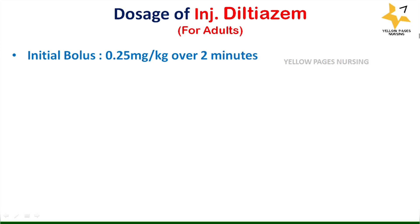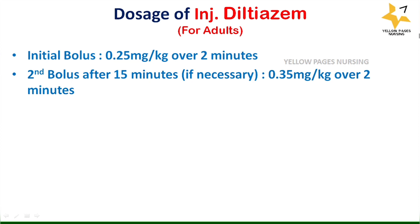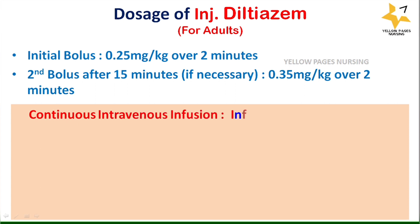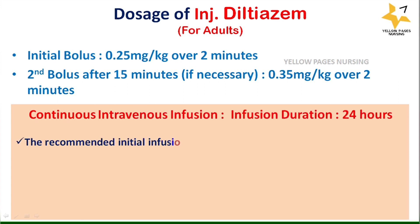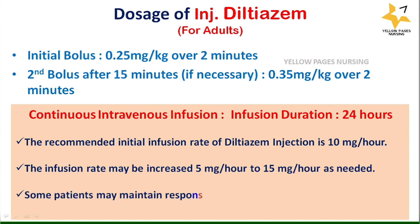The second bolus is given only when necessary, after 15 minutes of the initial one, at a dose of 0.35 mg per kg over 2 minutes. In cases of continuous intravenous infusion, the duration of the infusion will be 24 hours, and the recommended initial infusion rate of diltiazem injection is 10 mg per hour.